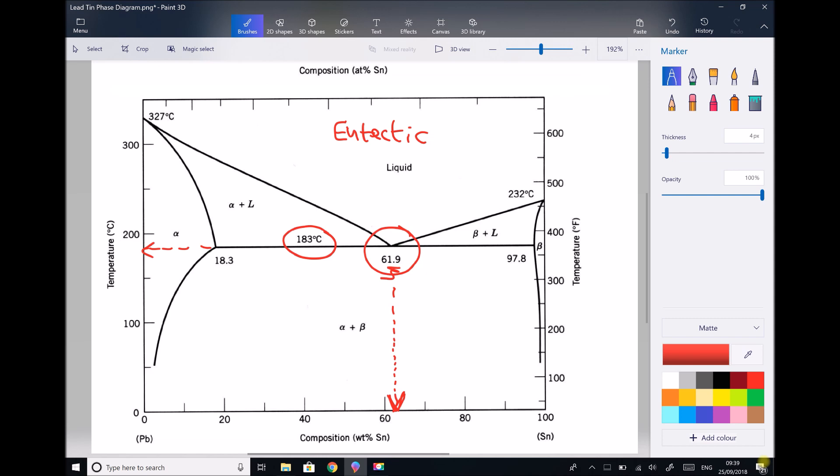What we notice at this eutectic point is at a composition of 61.9% we go immediately from liquid into alpha plus beta solid. So if you like that's our change in state point. We're going from liquid to solid. And we're going directly from liquid to alpha plus beta solid. Once again let's clear some space and explain that in a bit more detail.